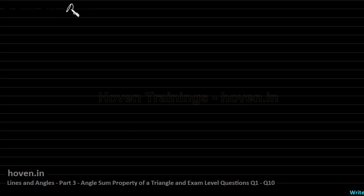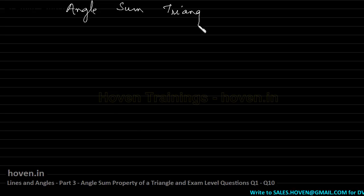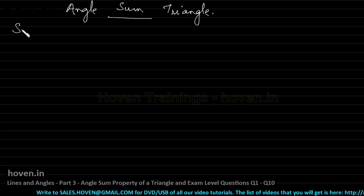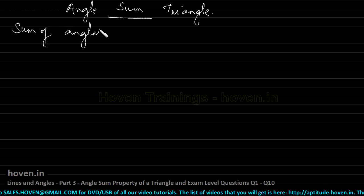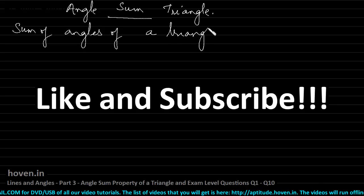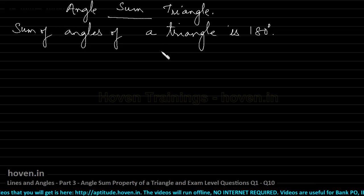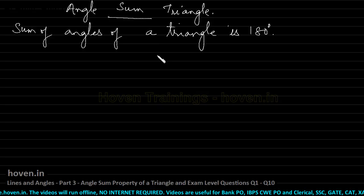We shall discuss the angle sum property of a triangle and take a number of solved questions at exam level — generally tougher level — on this property. First of all, I will prove that the sum of angles of a triangle is 180 degrees. The purpose of proving this is so you will be able to understand how we can carry on with various proofs and solve various questions on this angle sum property. The fundamentals are necessary.